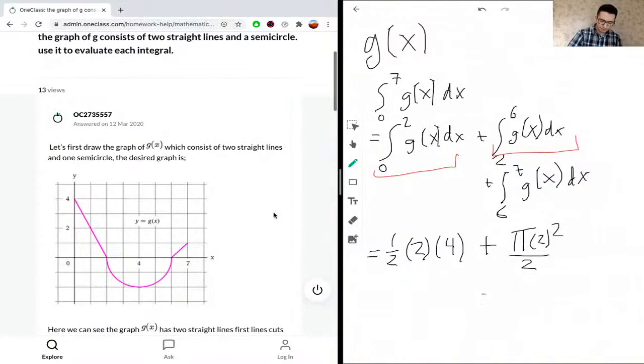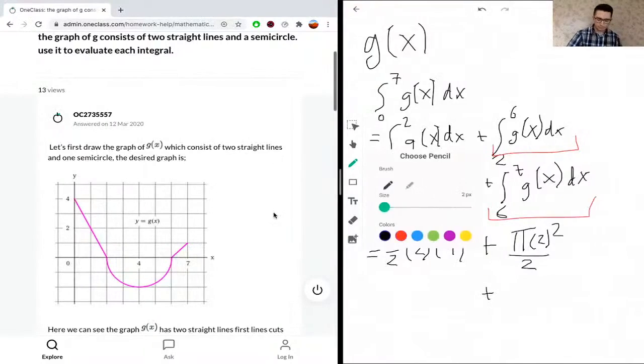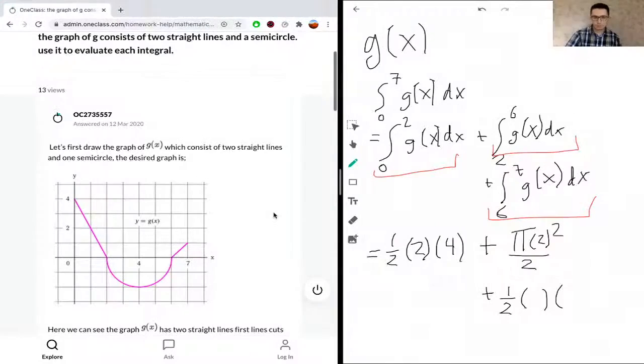And then finally the final component is this, and it's also another triangle. So we know the equation is a half base times height. So the first value for base is 1 unit, say 1, and then the height here is also 1 unit, say 1.